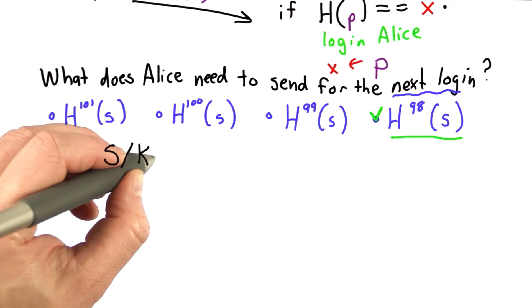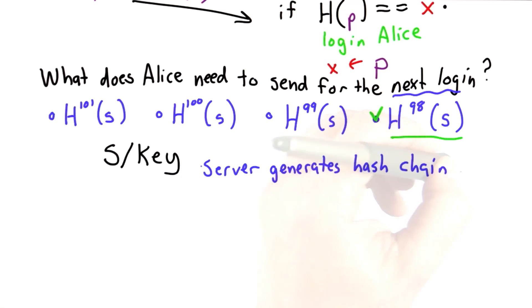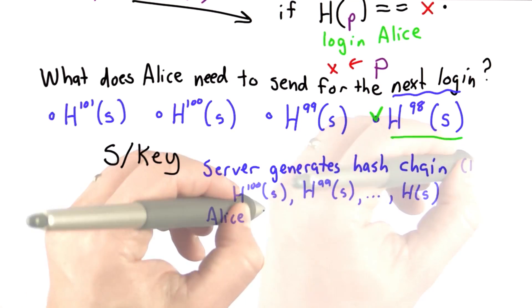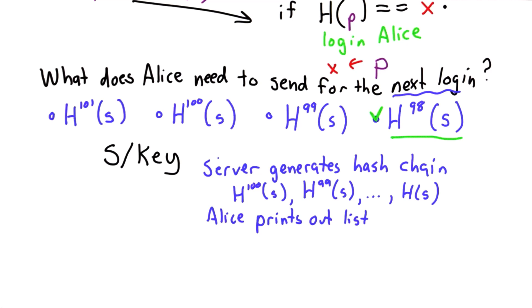So what I've described is what's known as the S-key password system. And the way S-key would work, the server would generate the hash chain. Let's say there are 100 entries. Alice would print these out in a list and they would be turned into strings that are easier to type than pure bit sequences.